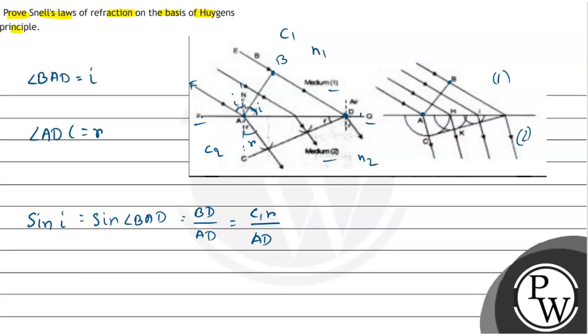Similarly, we are going to the ACD figure. This is the wave front you can see, ACD. When we are talking about the ACD figure, we can see that sin R is equal to sin ADC, which equals height by hypotenuse. That means AC by AD, which will be C2T divided by AD.